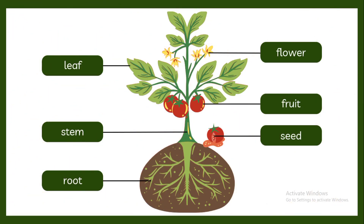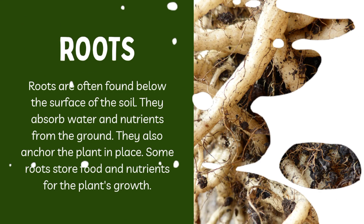The parts of a plant are: leaf, stem, root, flower, fruit, and seed.